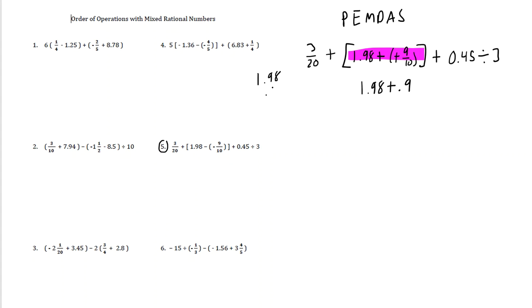1.98 plus 0.9. Remember when you add decimals, you line the decimals up. So that would be 2.88. That's what was inside our bracket.